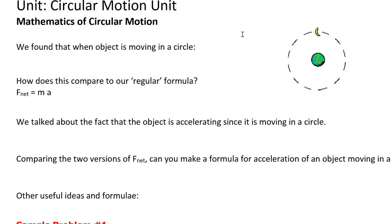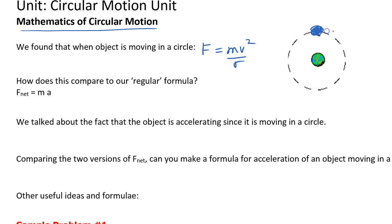Hi and welcome to the lesson on the mathematics of circular motion. We've been doing a lot of thinking about objects moving in a circle and we derived the formula F equals mv squared over r, where m is the mass of the object moving in kilograms, v is the speed tangent to the circle, and r is the radius.